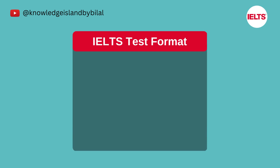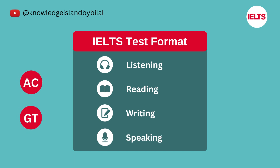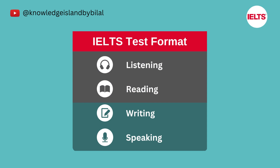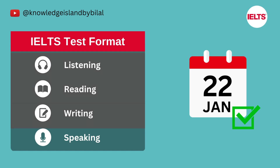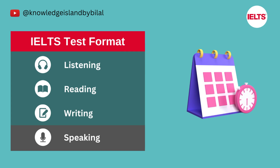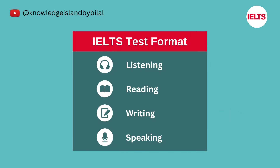The IELTS test includes four sections: listening, reading, writing, and speaking. For Academic and General Training, you will take the same listening and speaking tests but different reading and writing tests — make sure that you prepare for the correct test type. The listening, reading, and writing sections are completed on the same day with no breaks in between. The speaking test may be scheduled up to a week before or after the other tests. The total test time is two hours and 45 minutes.